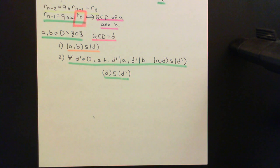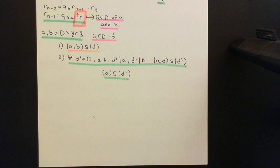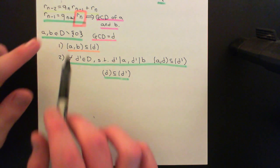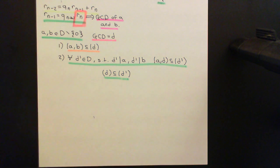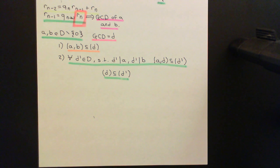Welcome back to this next video in which we are discussing Euclidean domains. We're in the process of discussing the Euclidean algorithm, and we're trying to understand why it is that the final remainder the Euclidean algorithm gives us is actually going to be the greatest common divisor of the two starting elements of the Euclidean domain that we started with.